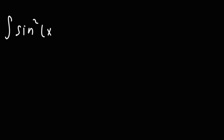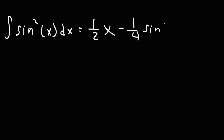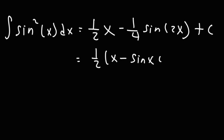The indefinite integral of sine squared x is going to be 1/2 x minus 1/4 sine 2x plus c. For those of you who don't remember the double angle formulas, sine 2x is 2 sine x cosine x — I'm going to put the trig formula sheet in the description below for review. So we can also write this as 1/2 x minus sine x cosine x plus c.